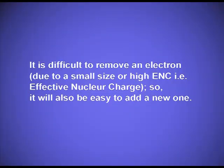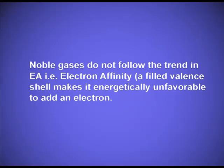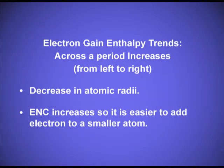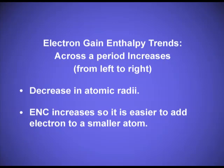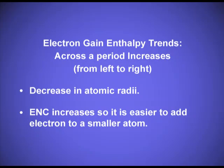The same applies to oxygen and sulphur. It is difficult to remove an electron due to small size or high effective nuclear charge, so it is also easy to add a new one. Noble gases do not follow the trend in electron affinity because a filled valence shell makes it energetically unfavorable to add an electron. Electron gain enthalpy increases across a period due to the decrease in atomic radii from left to right. When the size decreases and effective nuclear charge increases, it is easier to add an electron to a smaller atom.